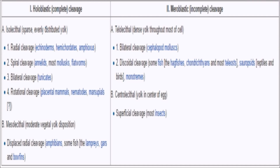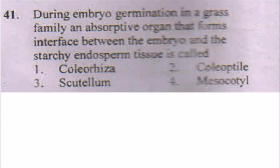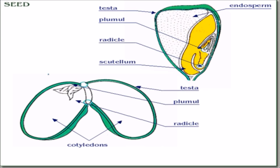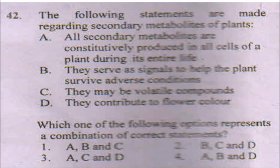I have listed all the types of cleavage here — you can pause the video and make a note of them, as these types of questions are asked frequently and are totally based on memory. The next question is: during embryo germination in the grass family, an absorptive organ that forms an interface between the embryo and the starchy endosperm tissue is called the scutellum. You can see here that the scutellum is the barrier between the endosperm and the embryo.